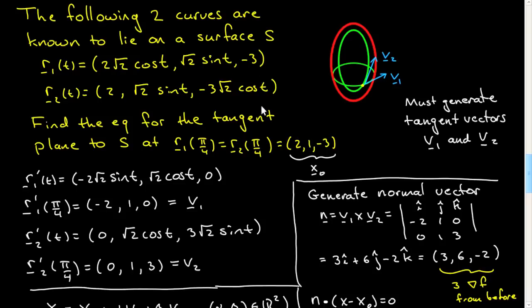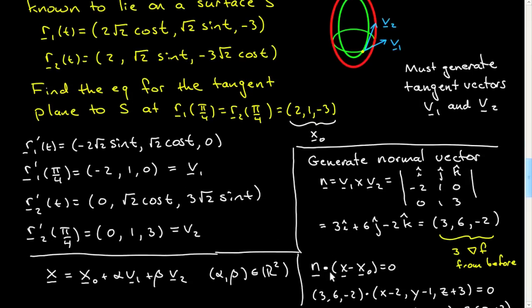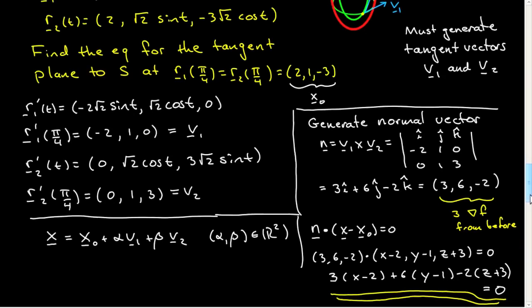But I want to emphasize the way to do it is to get these two vectors, get the two tangent vectors, then immediately construct a normal vector and use this very simple relation to get your answer. So get tangent vectors, then immediately get the normal vector, and then you can just plug into this and you'll be very happy that you did that.